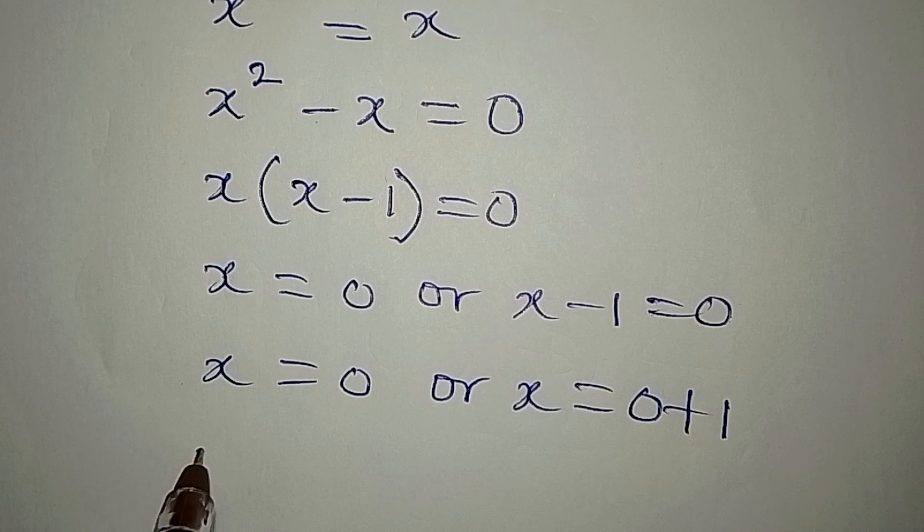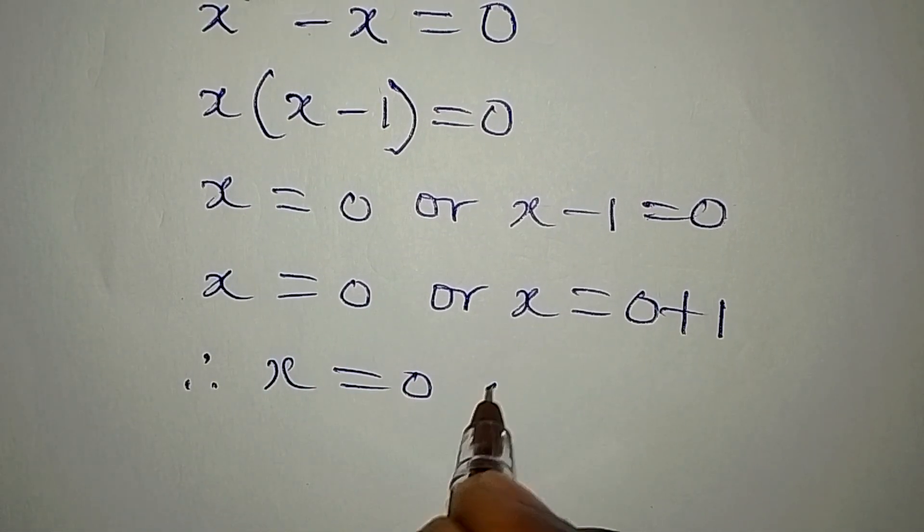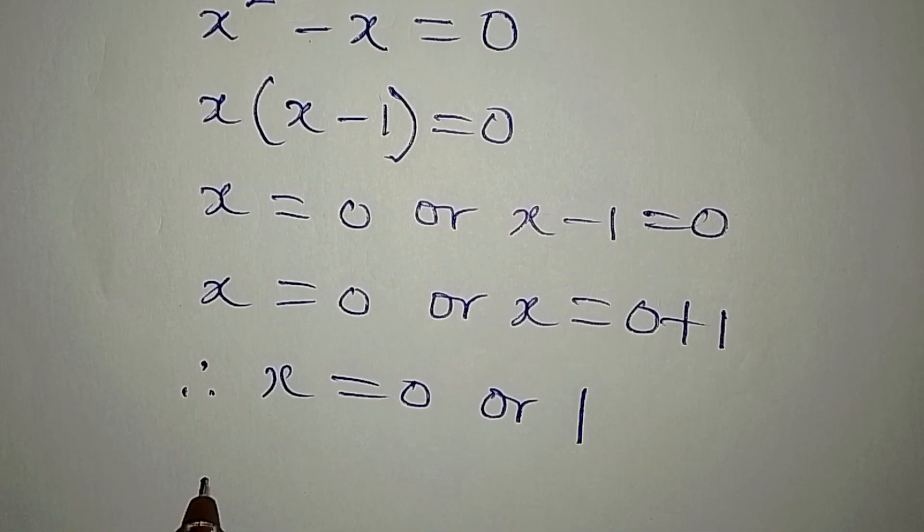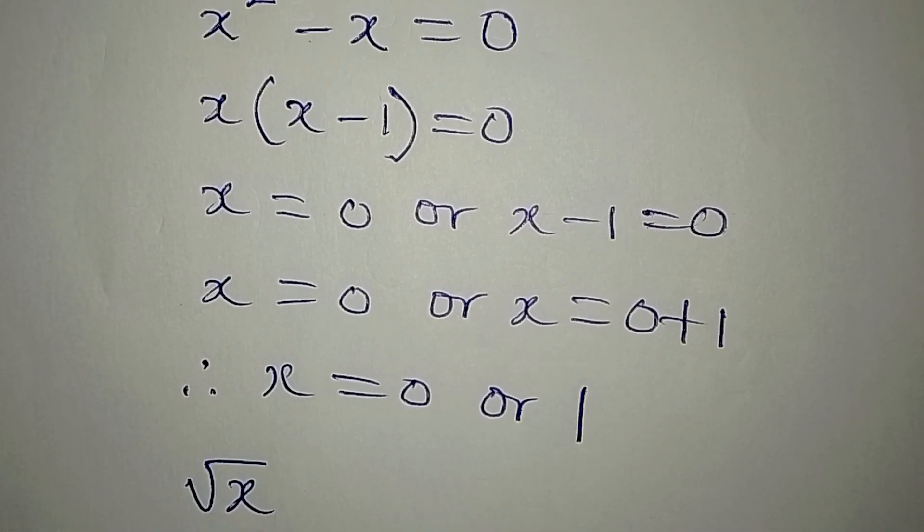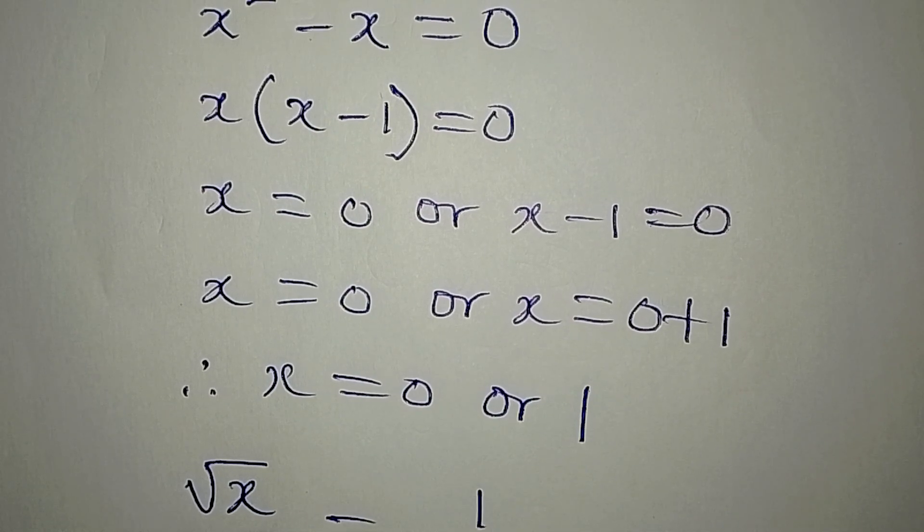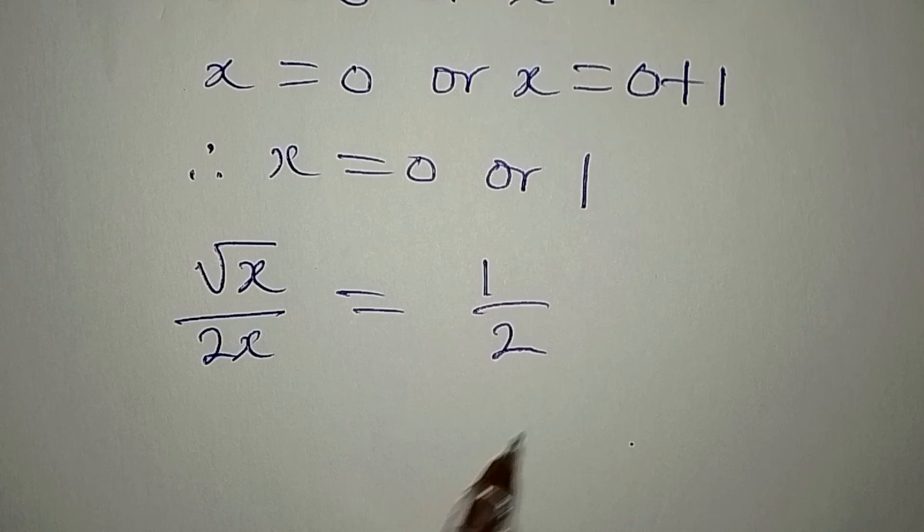But then the original equation is square root of x over 2x equal to 1 over 2. This is the original equation.